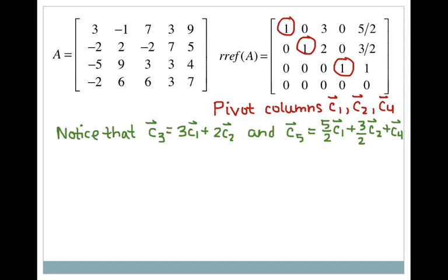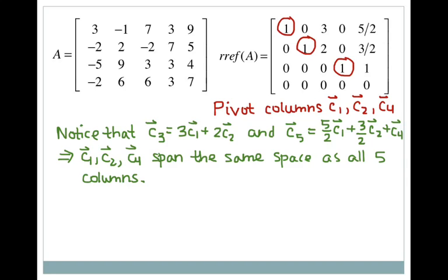Let me explain why this is true. Looking at columns 3 and 5, I can see that column 3 is equal to 3 times column 1 plus 2 times column 2 — I get this relation by looking at the columns of the reduced matrix. Column 5 is equal to 5/2 times column 1 plus 3/2 times column 2 plus 1 times column 4. So C1, C2, and C4 span the same space as all 5 columns, because C3 and C5 can be achieved through a linear combination of C1, C2, and C4.